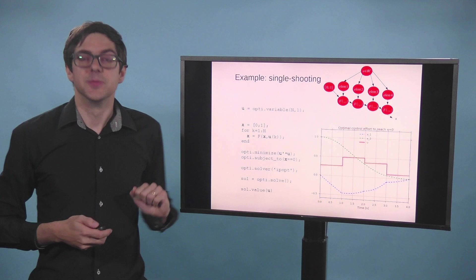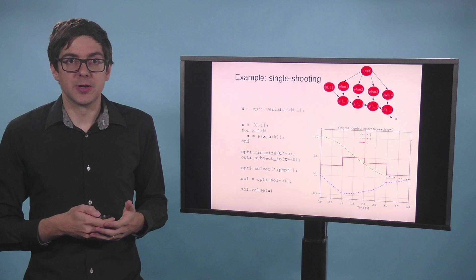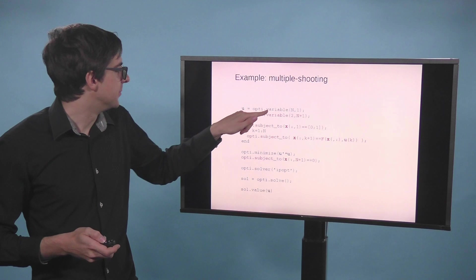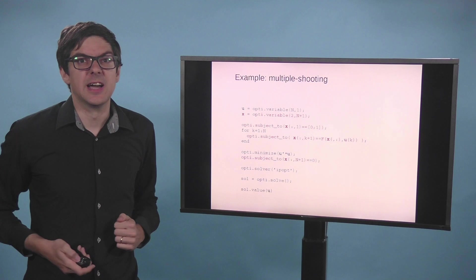So that's single shooting. And to show you how powerful CASADI is, we can go from this formulation to multiple shooting very easily. The only thing we need to do is add extra variables for the states. So we're going to do that. We're going to make extra variables. We have two states and we repeat it n plus 1 times.